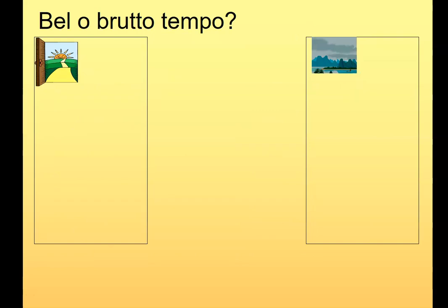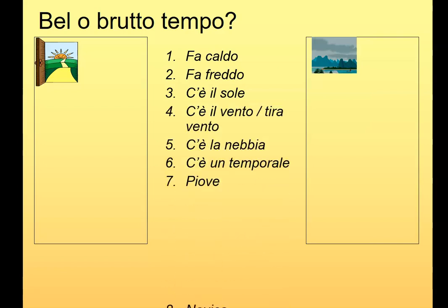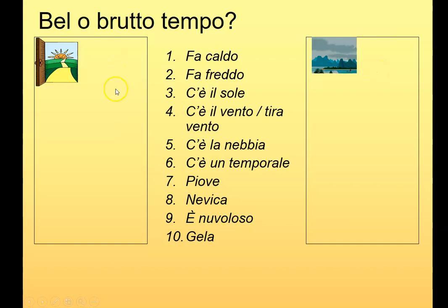Bello brutto tempo — what does it mean in English? Bello o brutto tempo means nice or bad weather. Allora, ci sono dieci frasi — ten weather phrases. Fa una decisione: fa bello o fa brutto tempo? Is it good or bad weather? Mettete in due gruppi — put them in two groups: bel tempo or brutto tempo. Grab a pen and jot down which phrases are good weather and which are bad.